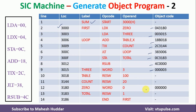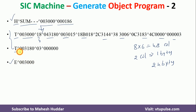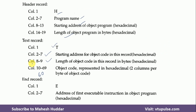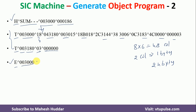Similarly, there are a few more text records remaining. The next text record has starting address 3180: T 003180, and it contains only one object code of 6 columns, which is 3 bytes. Finally, the end record is written. The end record contains the starting address of the first executable instruction: E 003000.